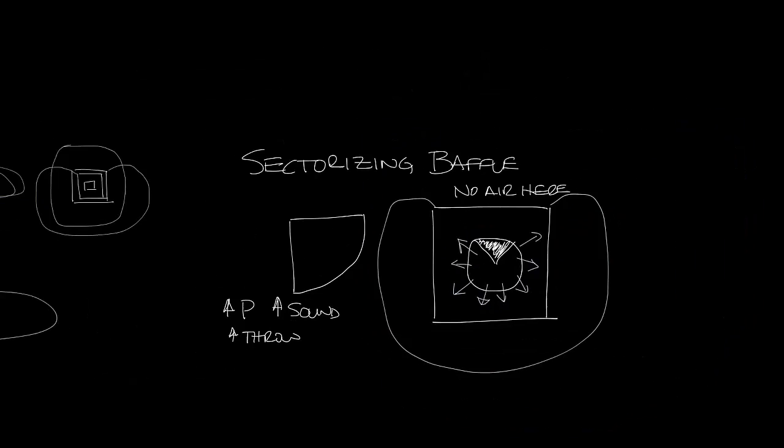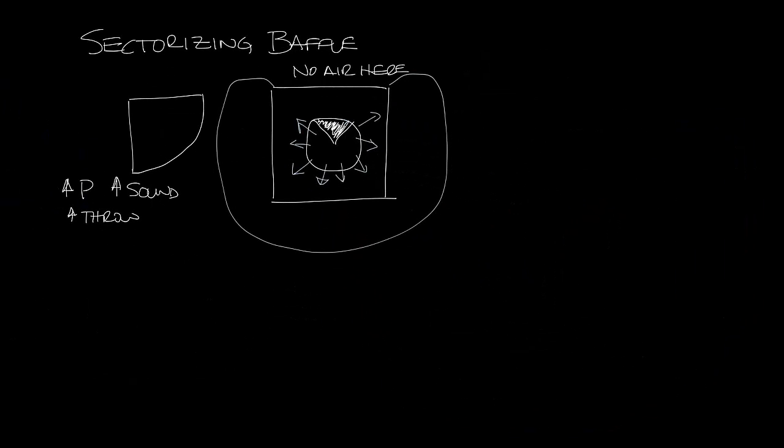Different diffusers will perform differently, but for example in a TMS, if you put in one sectorizing baffle, your pressure will increase by 8%, the sound will increase by 4 NC, and the throw will increase by 20%.